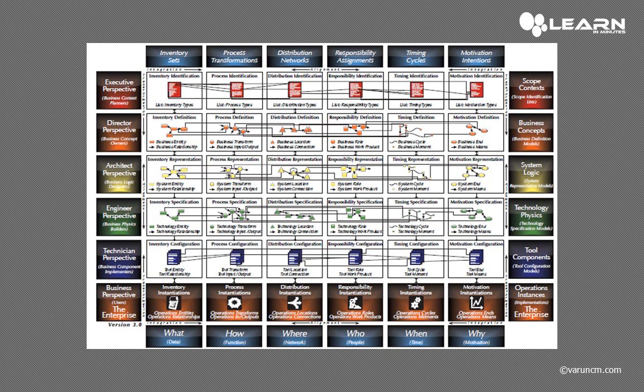You will be creating or mapping all 36 cells based on the enterprise you are working for. Based on your ERP, you will fill all this data. When completed, you can see that inventory instantiation, process instantiation, distribution instantiation, responsibility instantiation, timing instantiation, and motivation instantiation have all been done. At the end of the SACMAN framework you will have all the data needed.